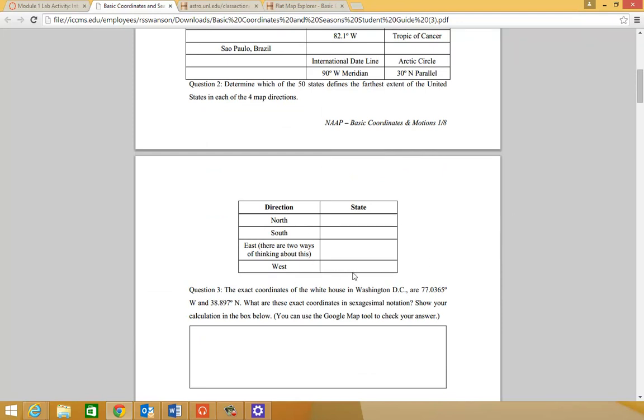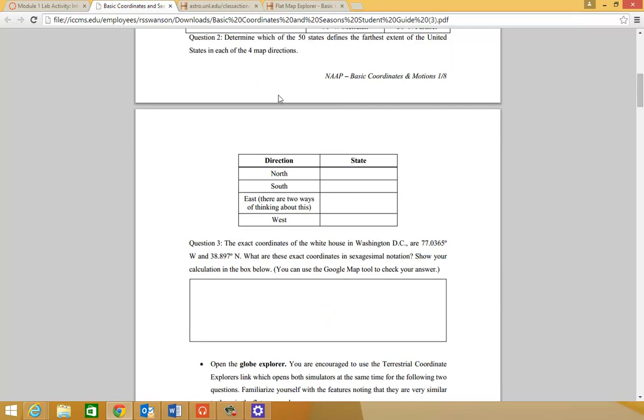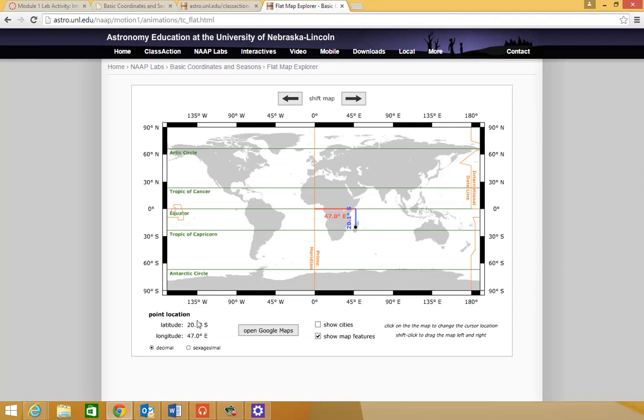Notice in question three, they ask about sexagesimal notation. This is not super important, it's sort of inside baseball. The Flat Map Explorer defaults to giving you latitude and longitude in decimal degrees. For example, Mississippi - I'm recording this in Tupelo, Mississippi. We're approximately 34 degrees north and about 88 degrees west. Notice I'm to the nearest 0.1 degree in both latitude and longitude.